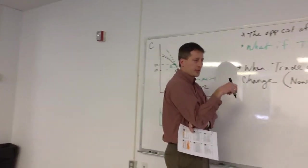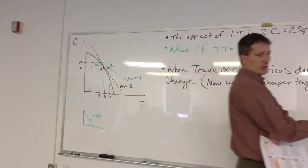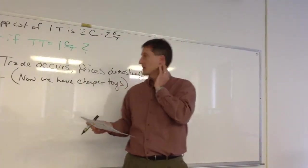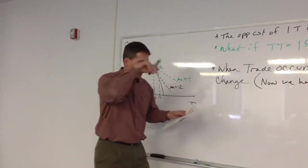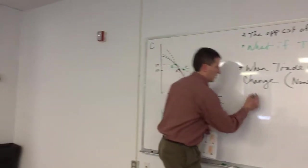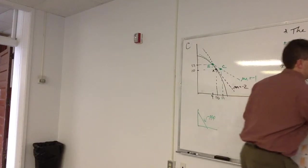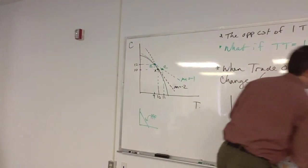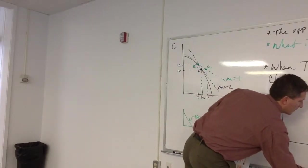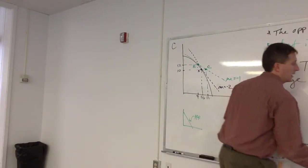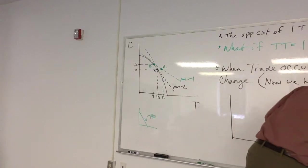And what the Stolper-Samuelson theorem brings into the picture is what's going to be the transitions over time to make some predictions on the factors that are used to make those goods. So just to help motivate this, we can think of the labor market for toys and the labor market for computers.